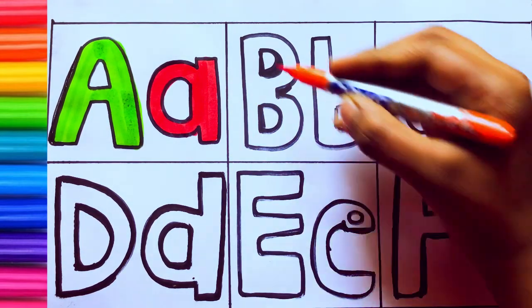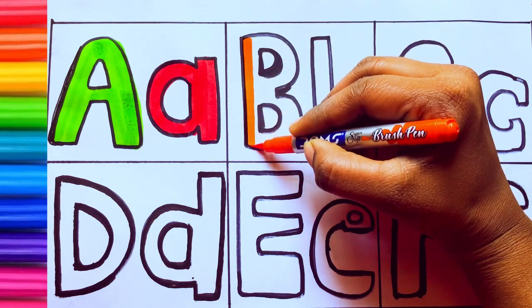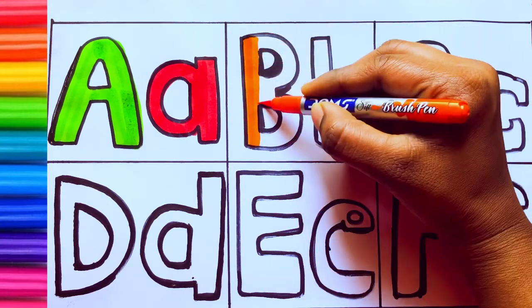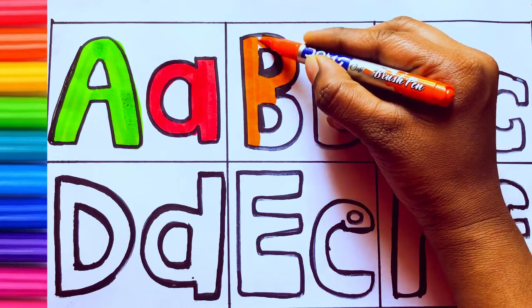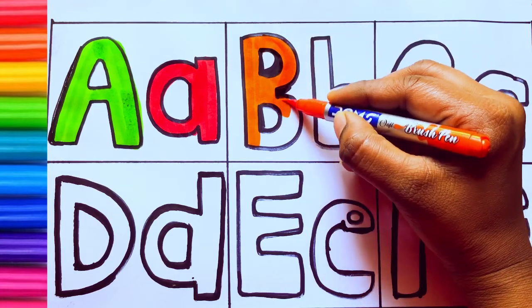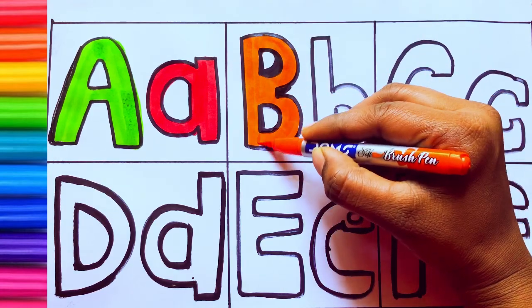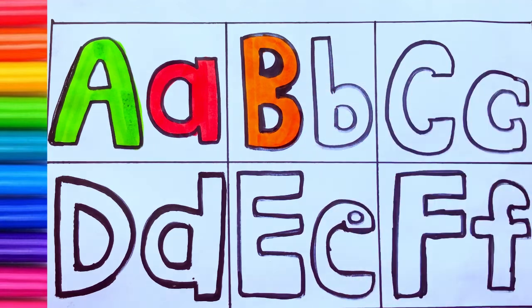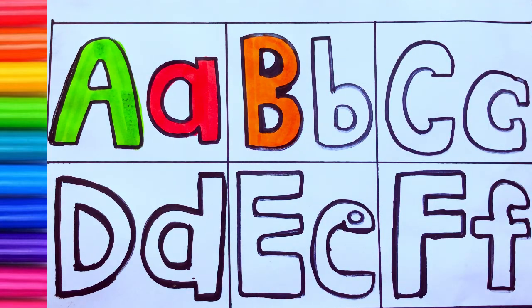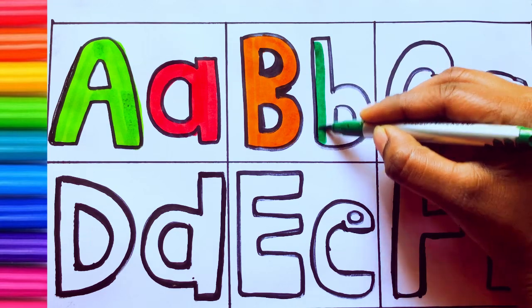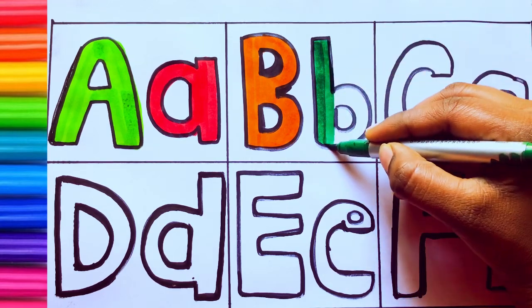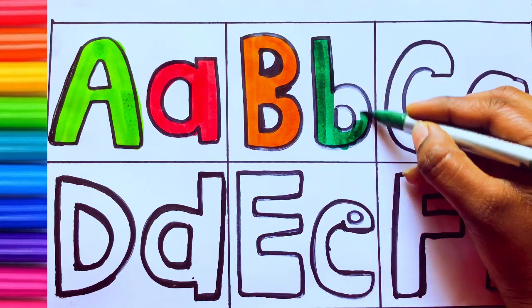Orange color, B. B, B for ball. B for ball, B-A-L-L, ball. Green color, small b. Small b, B for ball.